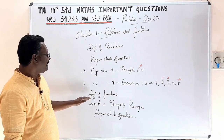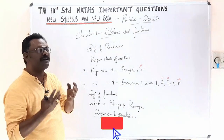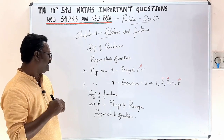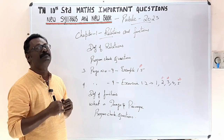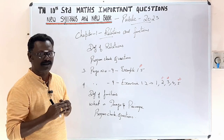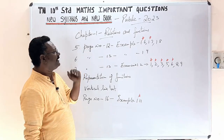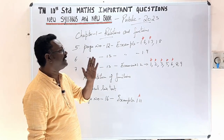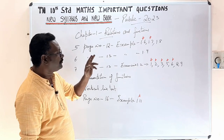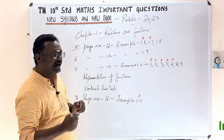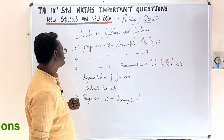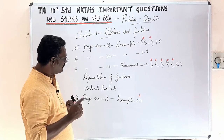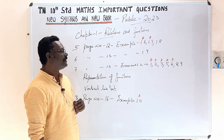Next, let's look at the definition of Functions — image, preimage, etc. We will look at the progress check questions. Page number 12, examples 1.6, 1.7, and 1.8. Page number 13, example 1.9. Page number 13, Exercise 1.2: 1st sum, 2nd sum, 3rd sum, 5th sum, 6th sum, 8th sum, and 9th sum.